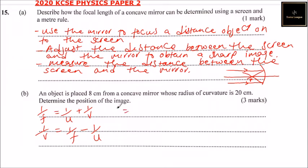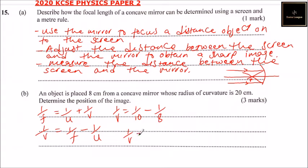So we have 1 over v equals: since the radius of curvature is 20, the focal length is half of that, so f equals 10. That gives us 1 over 10, minus 1 over 8 (the object distance). Cross-multiplying, we get 1 over v equals 8 minus 10 divided by 80.